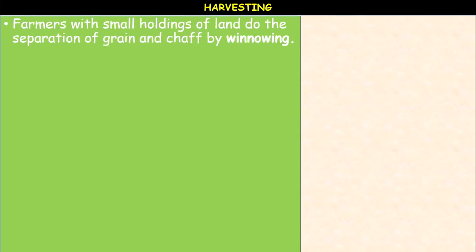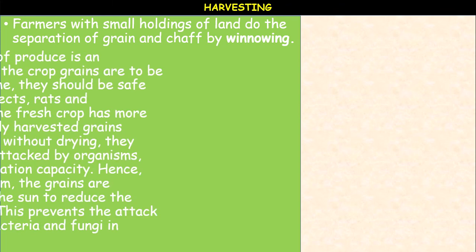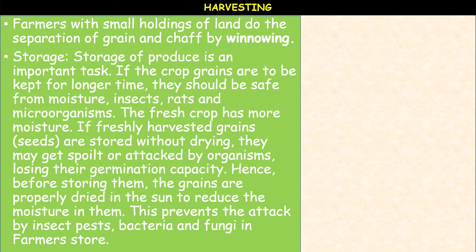Harvesting is followed by threshing, followed by winnowing. The farmers with small holdings of land do the separation of grain and chaff by winnowing. In the process of winnowing, the mixture is dropped on the ground from a height. The heavier seeds fall almost vertically down, whereas the lighter chaff gets blown away by the wind and falls at a distance. Winnowing can also be done by a winnowing machine. After harvesting the crop, stubs are often left in the field, which are then burned by the farmer.